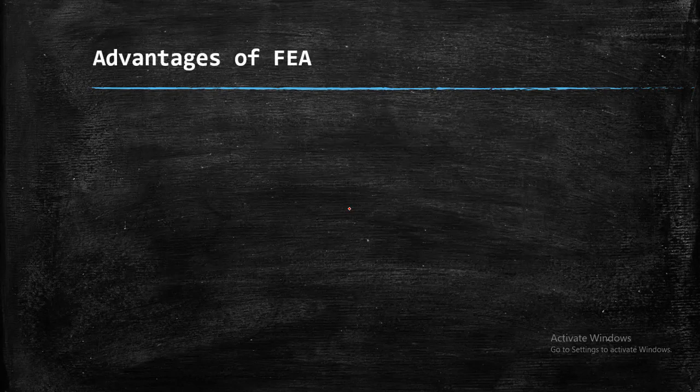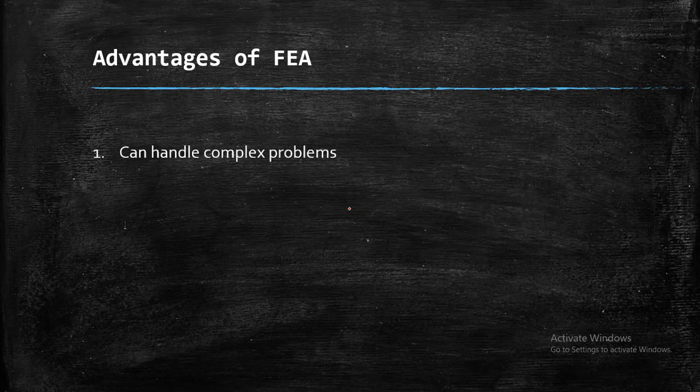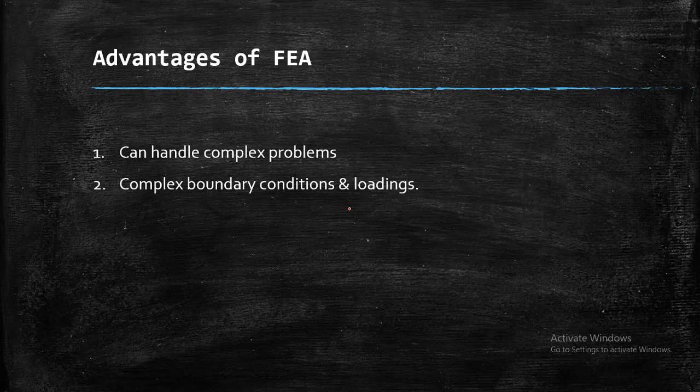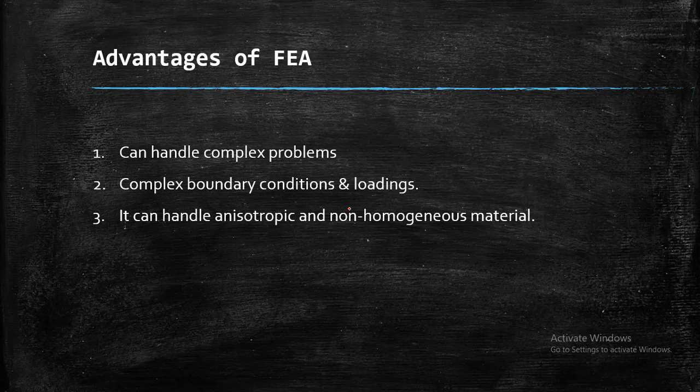Now, moving on. What are the advantages of FEA? FEA can handle complex problems like we said in the previous slide. Complex geometry, complex boundary conditions which can be solved by using FEA. And it can handle anisotropic and non-homogeneous material. If we are given with somewhat complex geometry, yes, we can take it. Also, if we are given with composite materials, that is it is non-homogeneous in nature, anisotropic in nature. So these problems can easily be solved by using FEA.